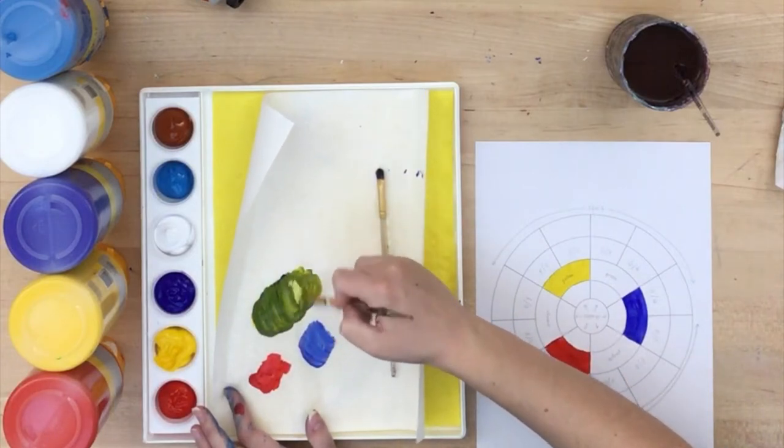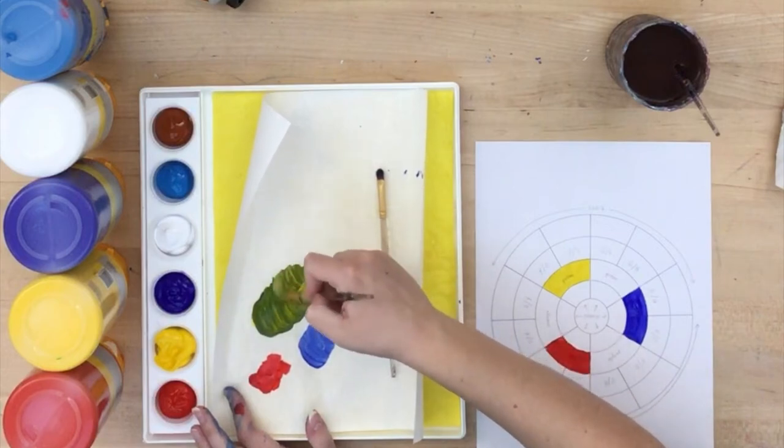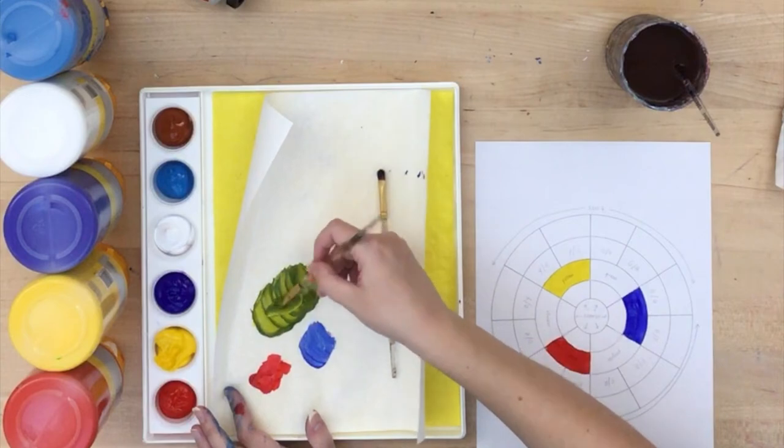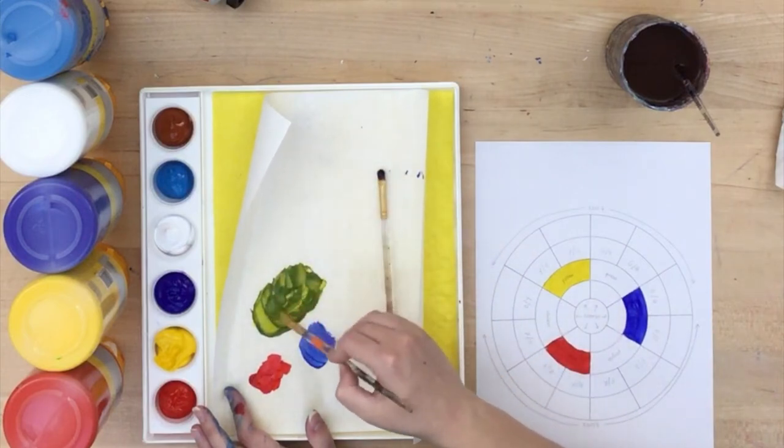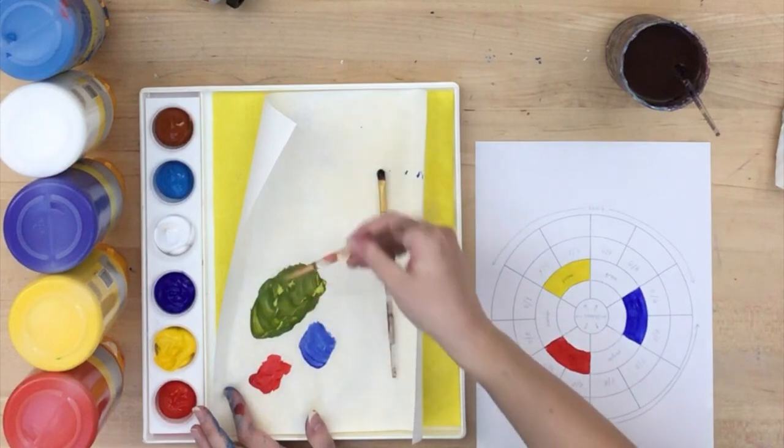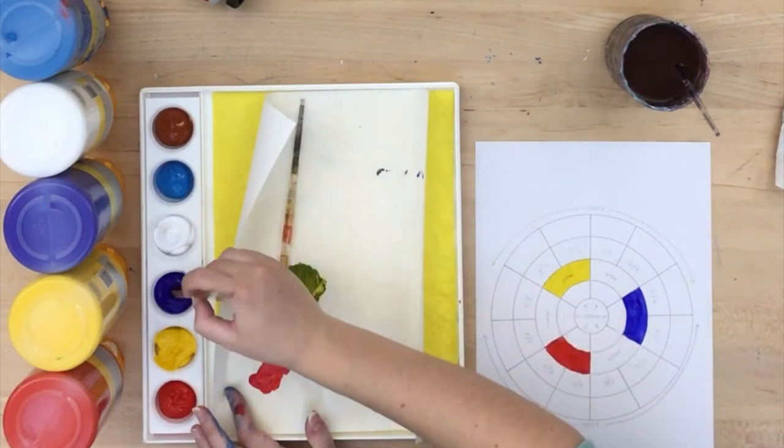Make sure when you're mixing, you mix all of the paint together. Don't just mix a little bit and assume it's too dark or too light or too yellow or too blue. It needs to be fully mixed like this. I'm going to do that one more time with the blue.